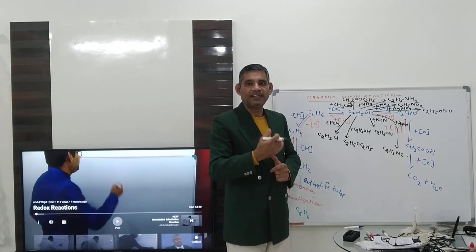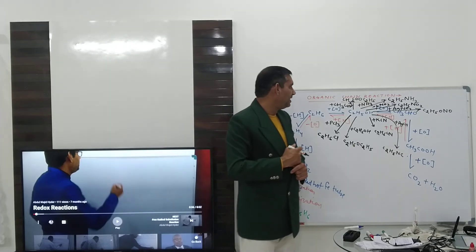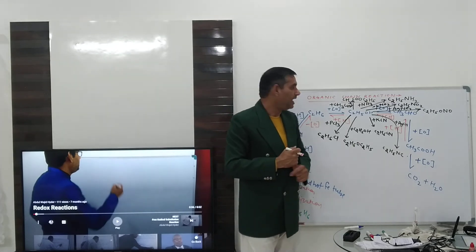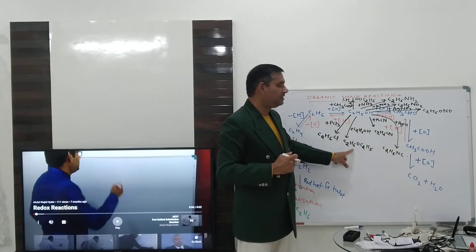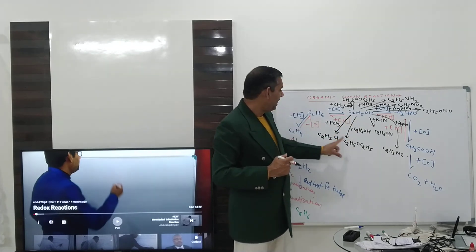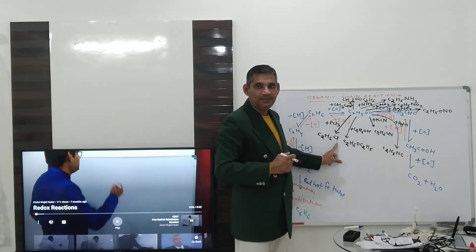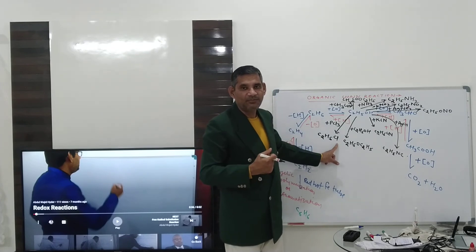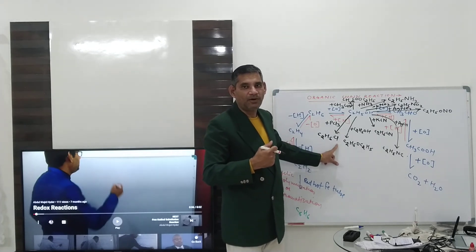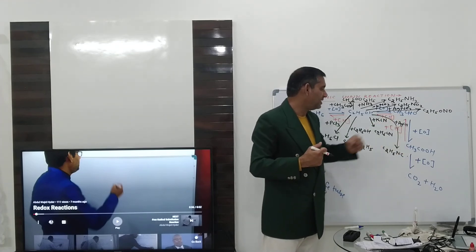This is your last chapter in 12th class second year organic chemistry. First chapter is alcohol, ether, halides — that's covered here. The next chapter is oxygen-containing compounds: aldehyde is covered here, acid is covered here.